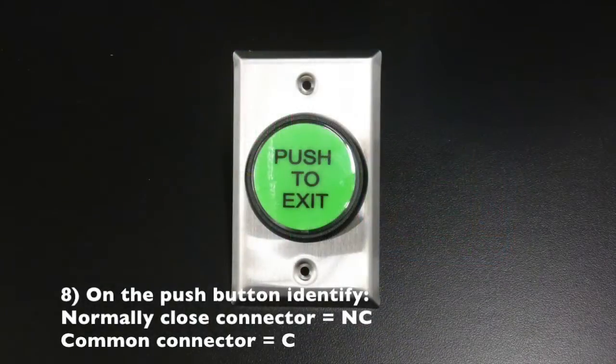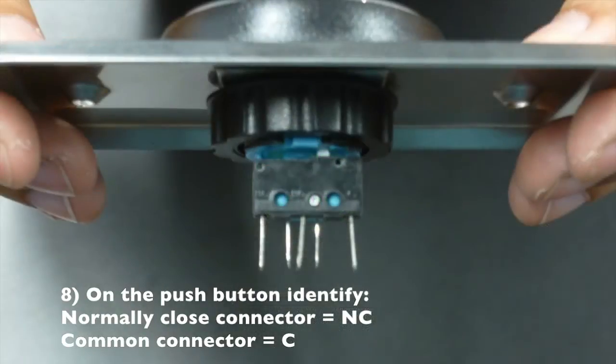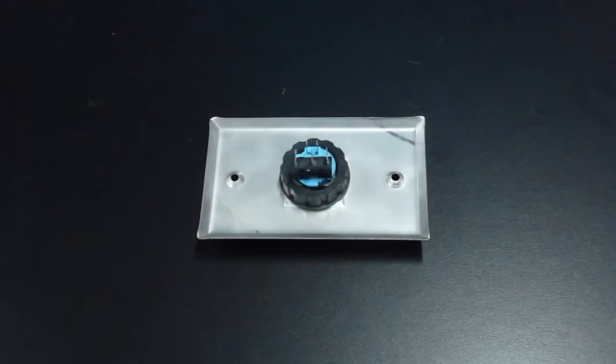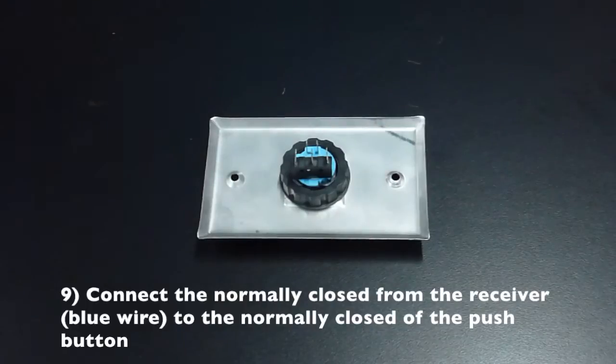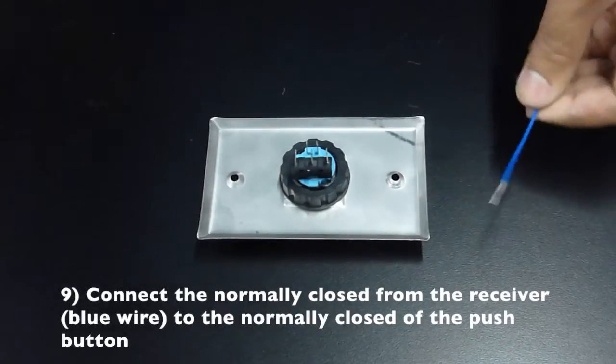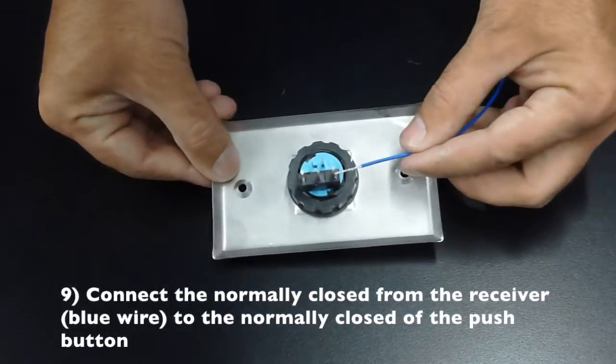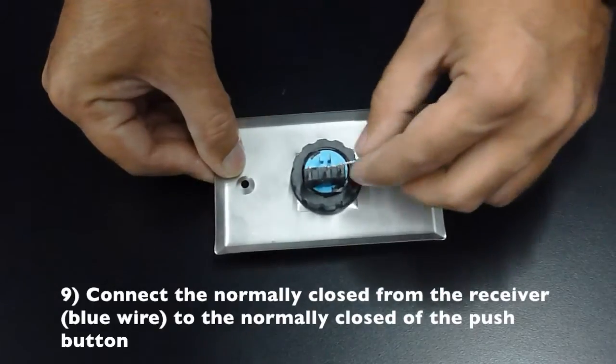On the push button, identify your normally closed connector, which is marked with NC, and your common connector, which is marked with a C. Connect the normally closed from the receiver, which would be your blue wire, to the normally closed of the push button.